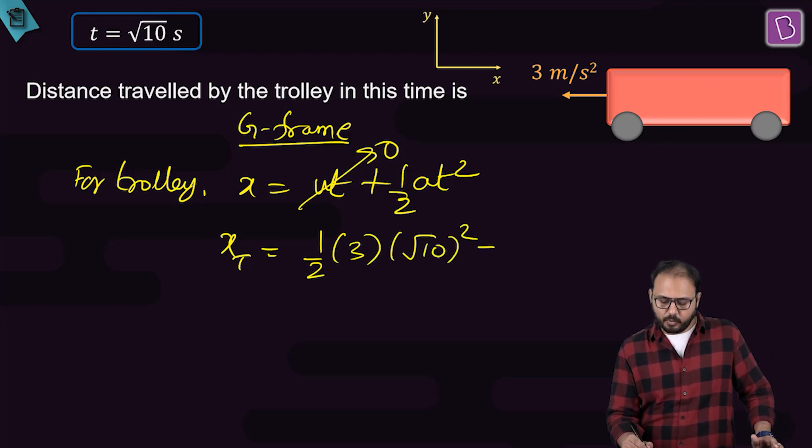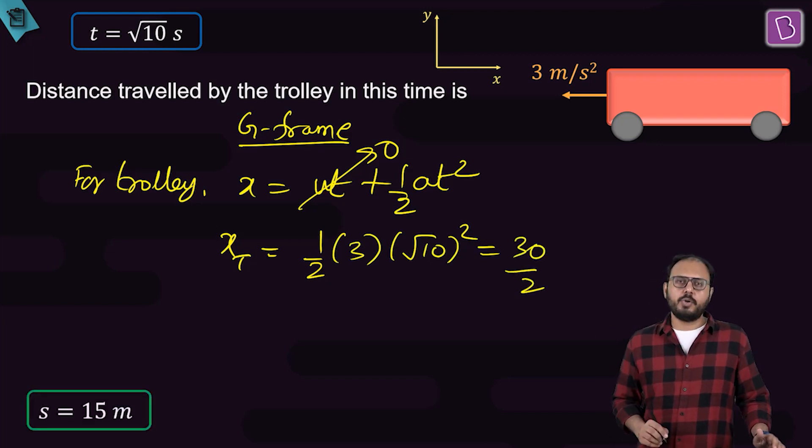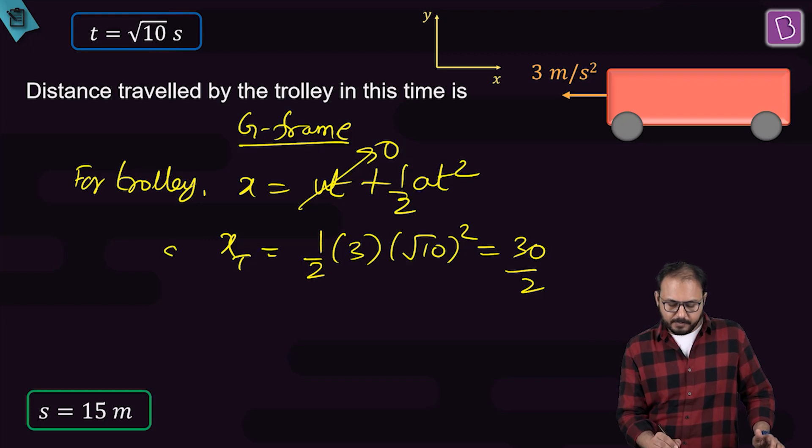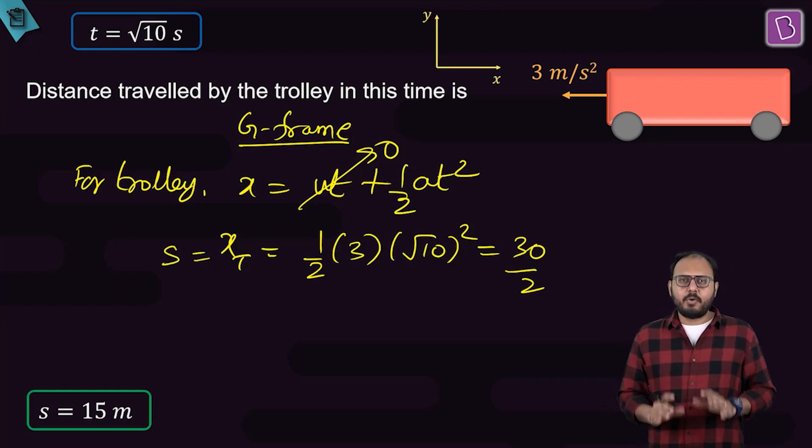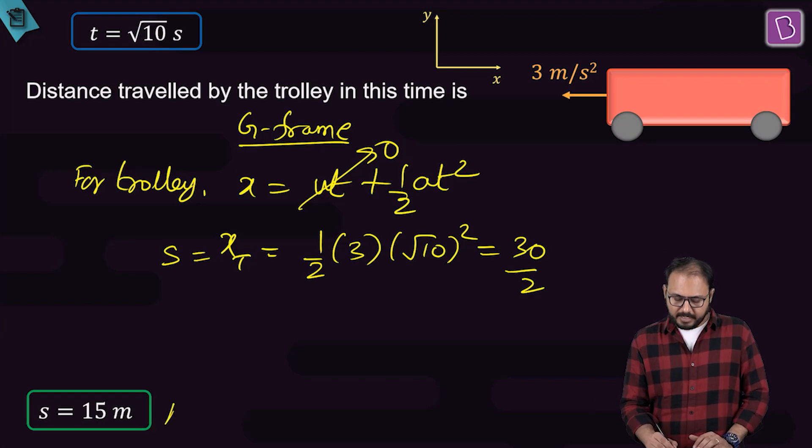10 into 3 by 2. You have a 30 upon 2 situation which is equal to 15 meters. Or the distance covered by the trolley in ground frame in that time when the block slips off of it is 15 meter final answer.